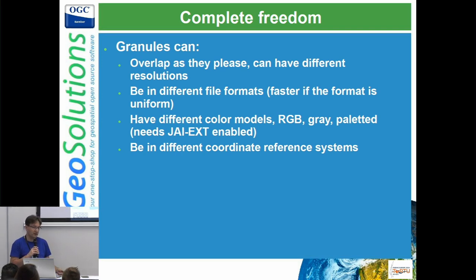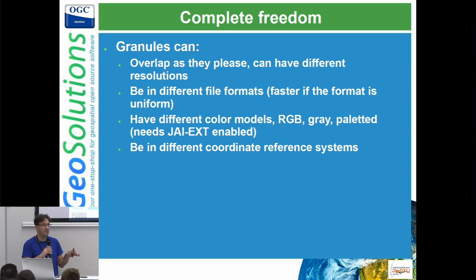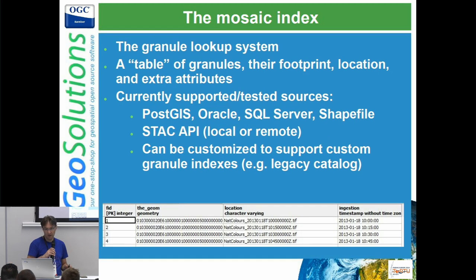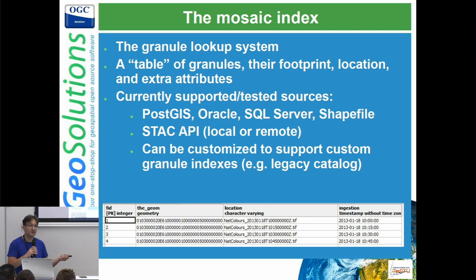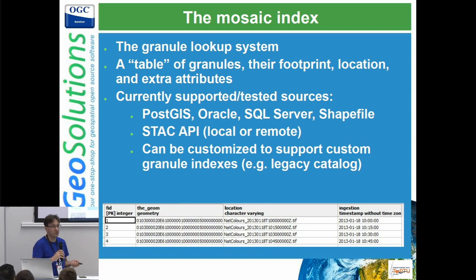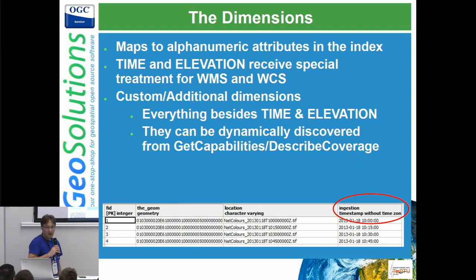The elements of a mosaic are called granules — the single files — and we have complete freedom over them. They can overlap, they don't have to be nicely aligned, they can be in different file formats, different projections, and within reason, different color models. The mosaic index is our filtering and lookup mechanism. It can be located in relational databases, but it can also be another STAC API — a remote STAC API. And there's a plug-in mechanism to write your own image mosaic index data source, to connect to an in-house catalog you already have without duplicating data.